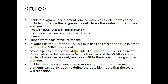Now we see the rule tag. Inside the grammar element, one or more rule elements can be included to define the language model. The syntax requires the rule tag with an id and a scope attribute. The id specifies the id of the rule, and this id is used to refer to the rule in other parts of the VXML document. The scope specifies whether the rule is public or private. Public rules can be referenced from other parts of the VXML document, while private rules are only available within the scope of the grammar element.